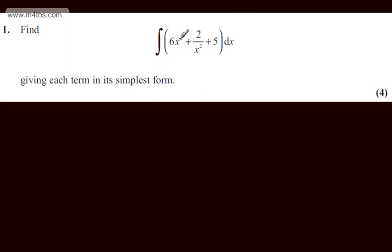This is question 1. We're asked to find the integral of 6x squared plus 2 over x squared plus 5 with respect to x, giving each term in its simplest form. The question carries four marks.